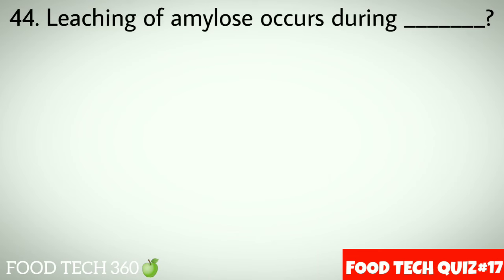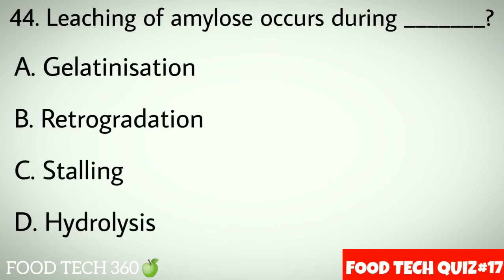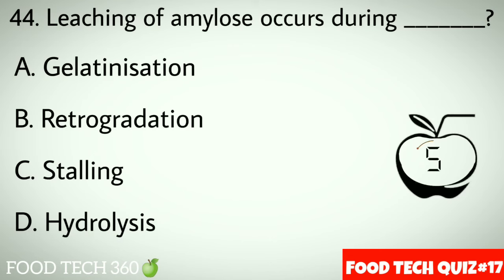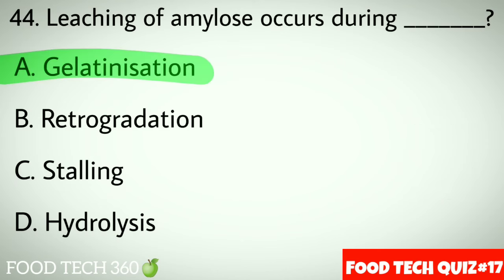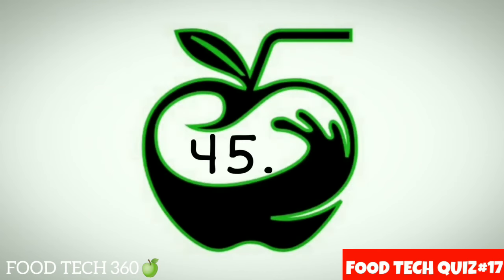Question number 44: Leaching of amylose occurs during dash. Options: A. Gelatinization, B. Retrogradation, C. Staling, D. Hydrolysis. Correct answer: A. Gelatinization.